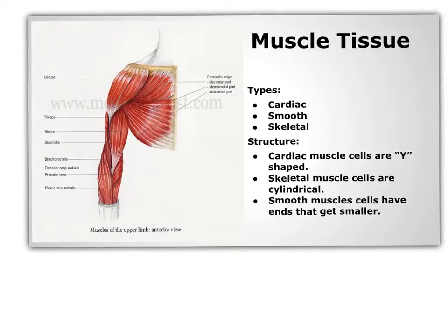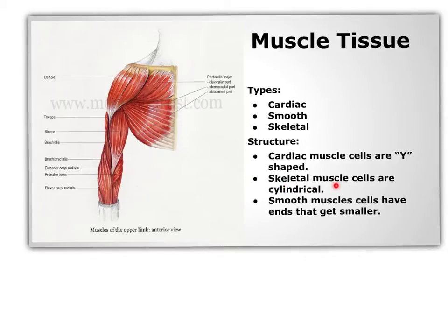There are three types of muscle tissue: cardiac, smooth, and skeletal muscle cells. Cardiac muscle cells are Y-shaped and they have a central nucleus. They are striated or striped. Smooth muscles can operate on their own without the brain telling them to, and smooth muscles are connected to each other. Skeletal muscle cells are cylindrical shaped and are striped, and they can sometimes contain several nuclei.